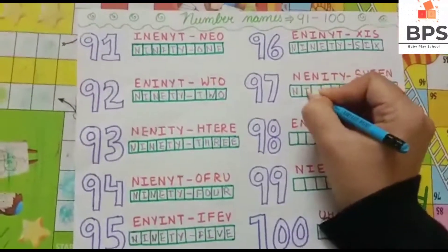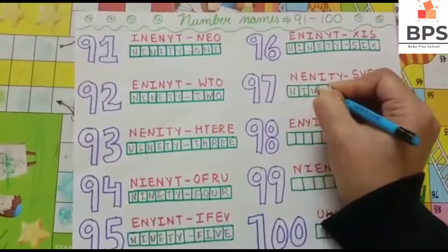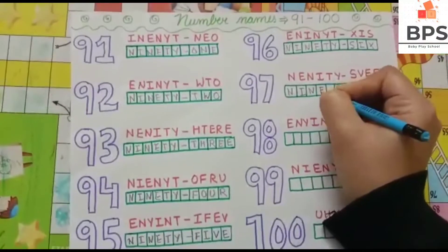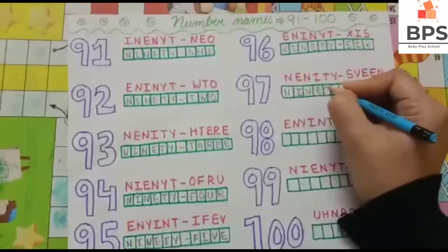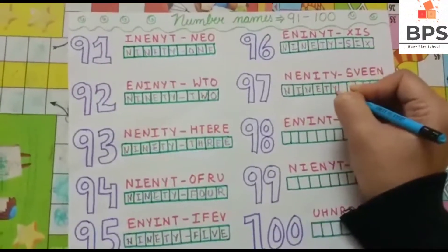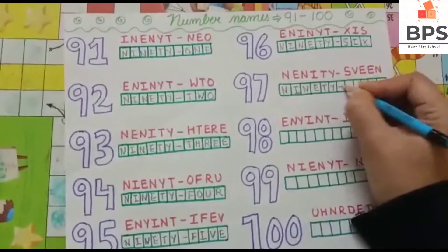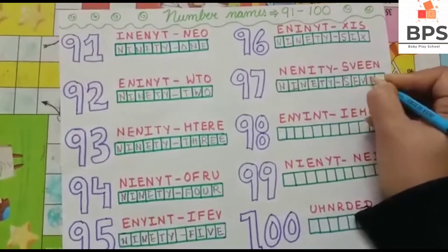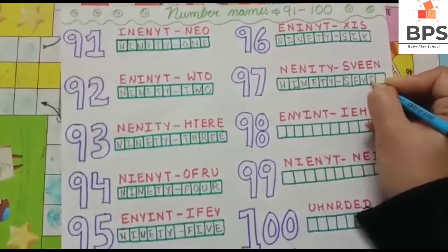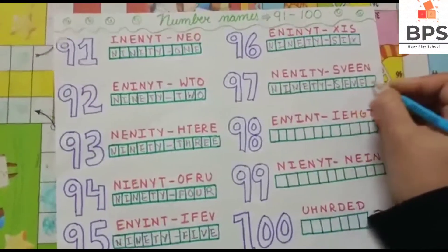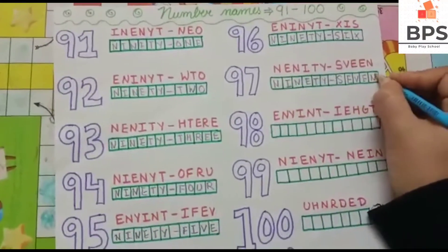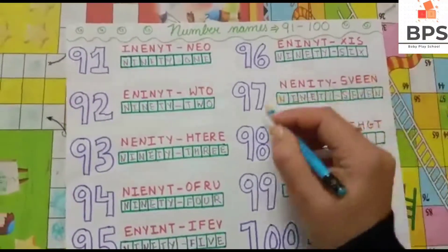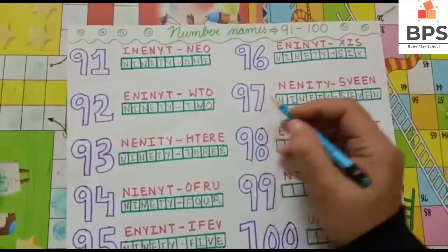97 — N-I-N-E-T-Y, 90, S-E-V-E-N, 7, so 97.